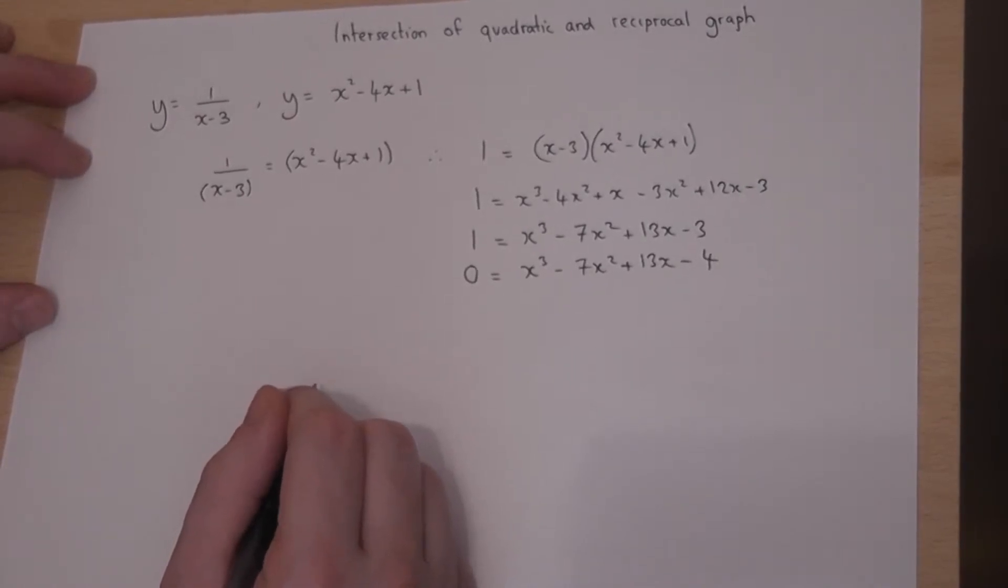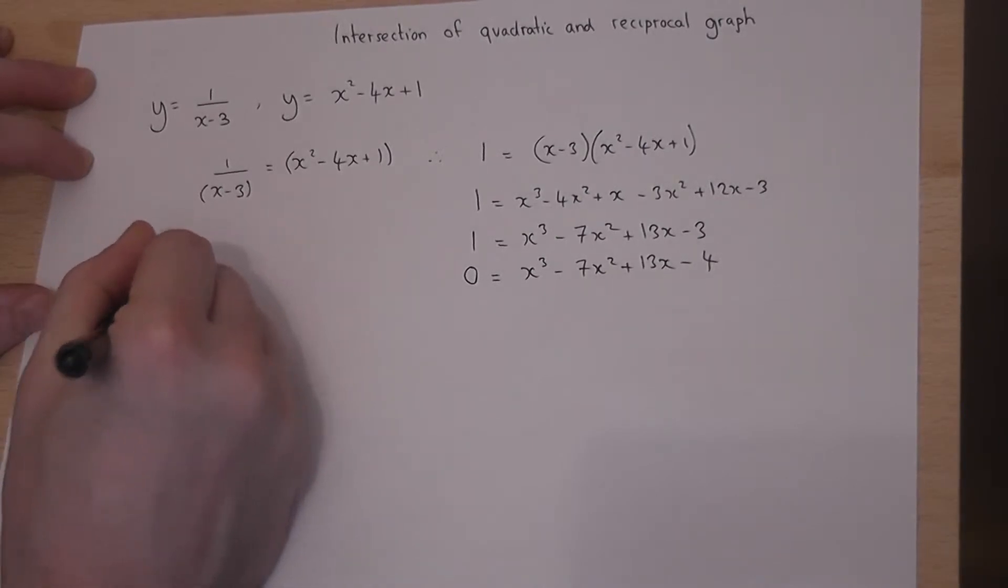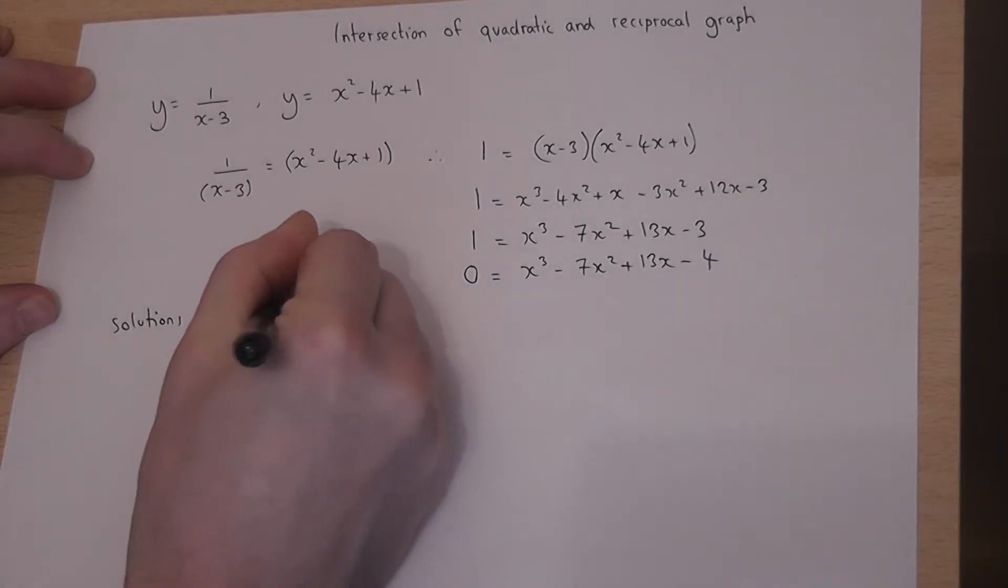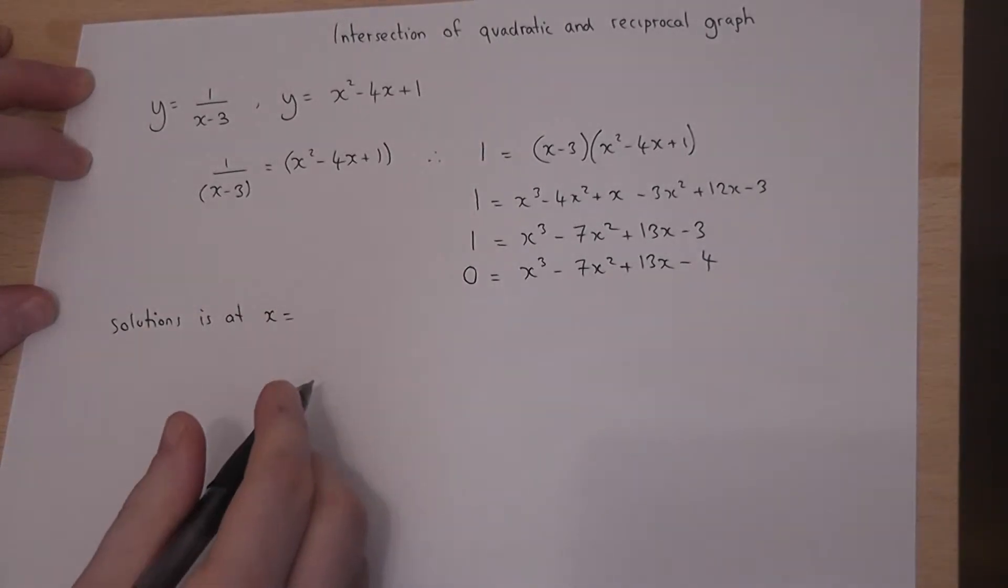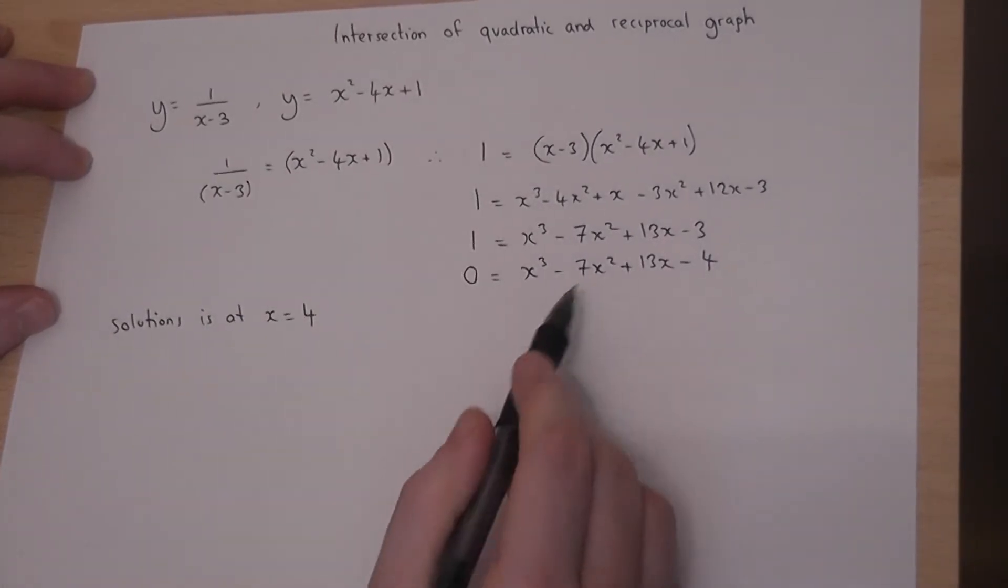Now let us suppose that we were told that one of the solutions is at x is equal to plus 4, that that is a root of this equation.